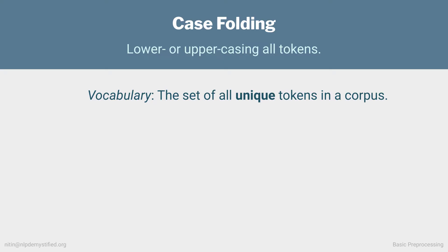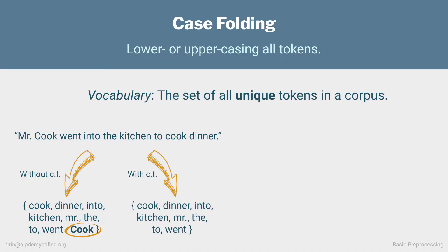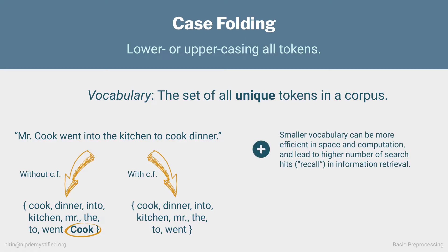Take the sentence: Mr. Cook went into the kitchen to cook dinner. If we tokenize without case folding, we end up with a vocabulary where the word cook appears twice — once with a lowercase c and again with a capital C. With case folding, however, cook appears only once. This serves to show that case folding can reduce the size of our vocabulary by combining words which differ only in case. On a large corpus, this can make a difference and lead to efficiency gains in both storage and processing.